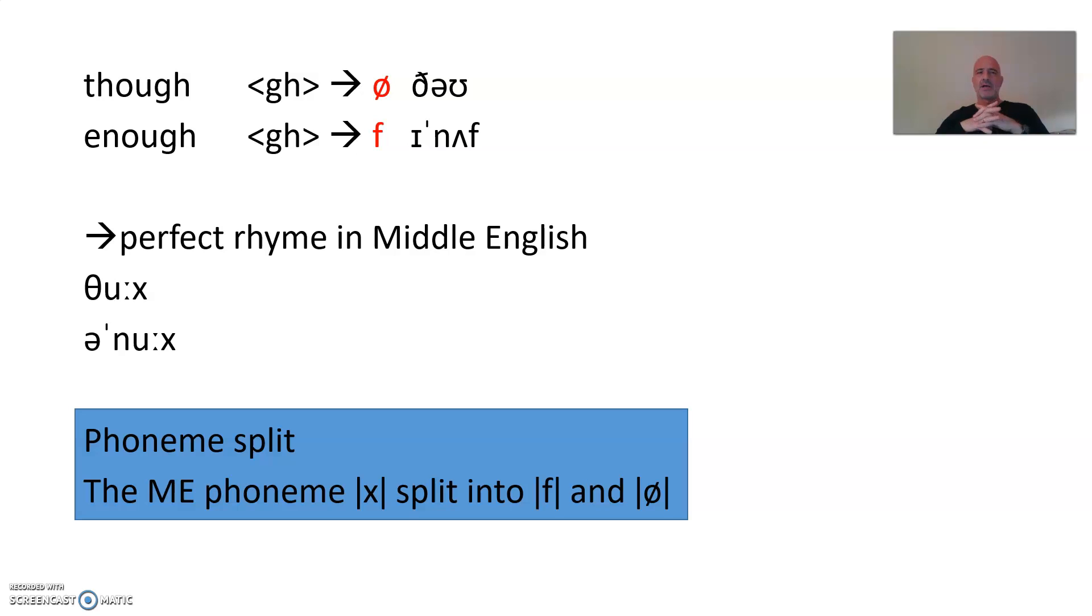Already alluded to that here, though and enough, yes, they were perfect rhymes in Middle English because they were thuch and enuch. And thuch and enuch, well, that's the definition of a perfect rhyme: first vowel after the stress and everything that follows. So what we have here, and this is something you have to learn, it's a typical phoneme split, which means the Middle English phoneme H split into F and zero. This is the symbol for zero, a phoneme split.